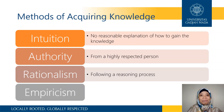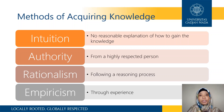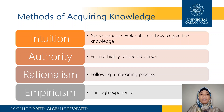Next is empiricism. This is the knowledge or conclusion that we gain by experiencing something. Normally when we're doing research, we will use this method to acquire knowledge or make a conclusion about our results, because we are making hypotheses and probably conducting an experiment — that's the experience part of the research — and then we make conclusions based on that.